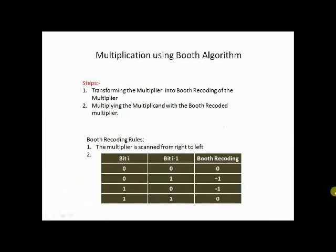There are two steps. First is transforming the multiplier into Booth's recording of the multiplier. The second step is multiplying the multiplicand with the Booth recorded multiplier.